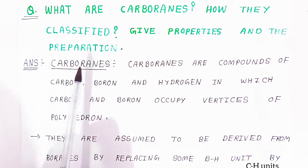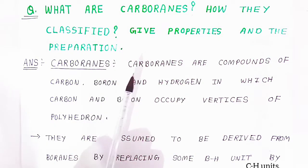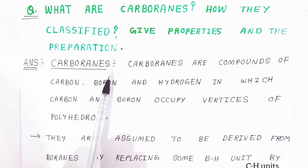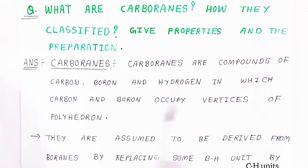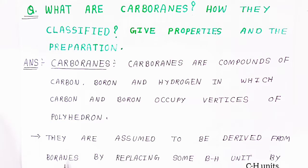It is very important to know what carboboranes are, as this topic comes up in examinations. This is how you have to start the answers: Carboboranes are compounds of carbon, boron, and hydrogen in which carbon and boron occupy the vertices of a polyhedron. They are assumed to be derived from the borons by replacing some BH units with CH (carbon-hydrogen) units.